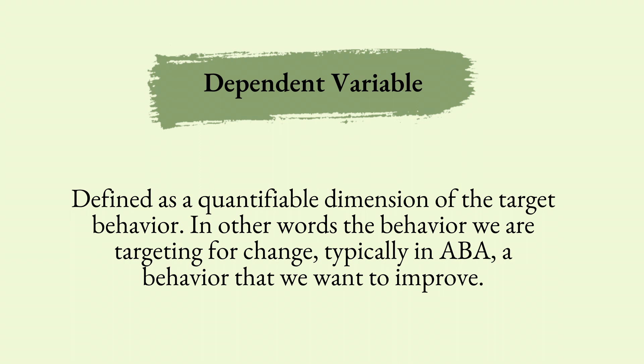Let's talk about the dependent variable. This is defined as a quantifiable dimension of your target behavior. In other words, we are looking at this as our target for change. Typically within ABA, this is the behavior that you want to improve — whether it's aggression, reading words, sight words to help your client, or independent living skills. These are examples of dependent variables that we want to increase or decrease.